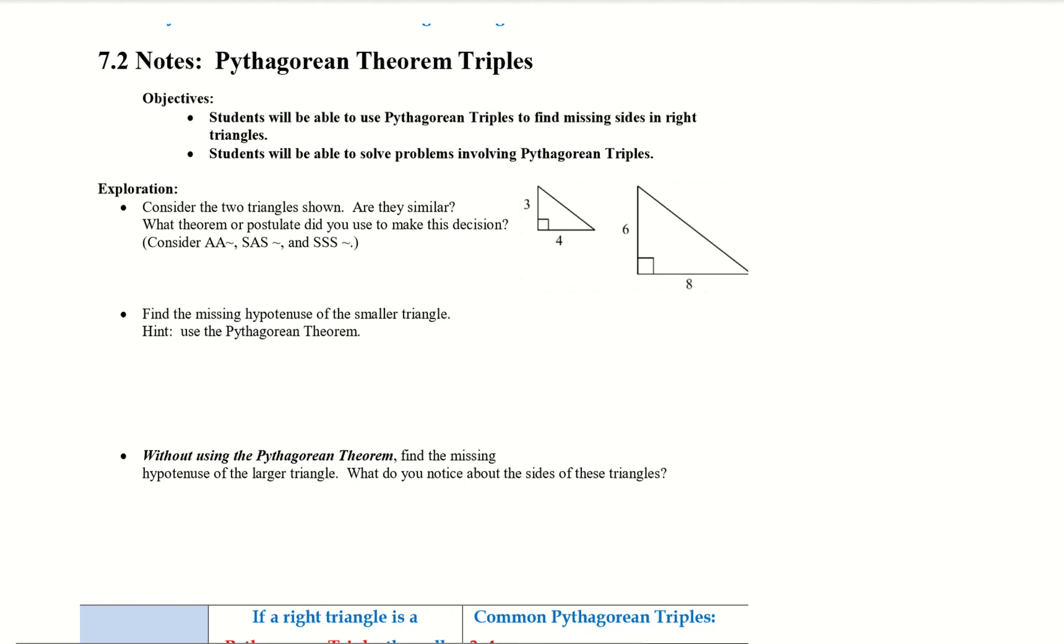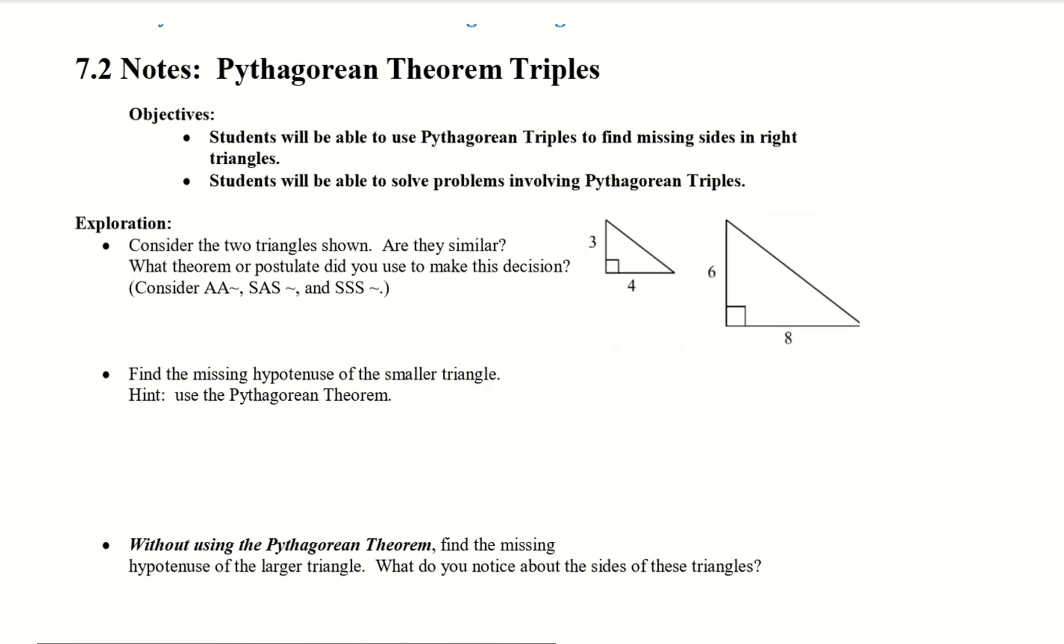Hello everybody. Today we're going to be doing the 7.2 note on Pythagorean theorem triples. So our objective, students will be able to use Pythagorean triples to find missing sides in right triangles. Students will be able to solve problems involving Pythagorean triples.